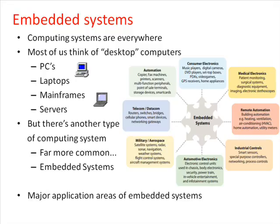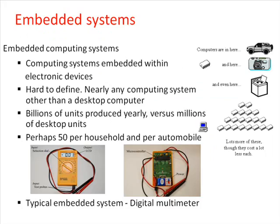An embedded system is a computer system with a dedicated function within a large mechanical or electrical system, often with real-time computing constraints. There are billions of units produced yearly compared to millions of desktop units — perhaps 50 per household and per automobile.